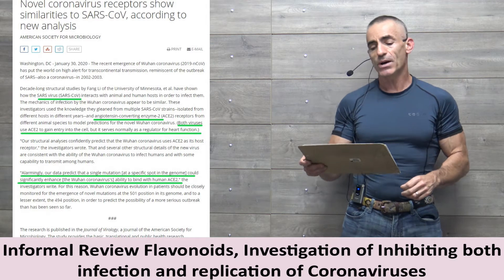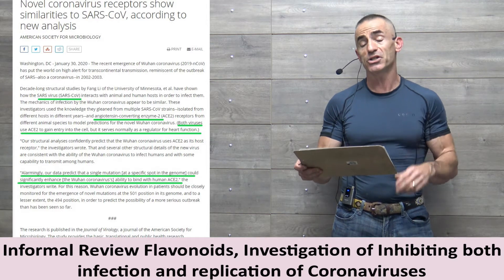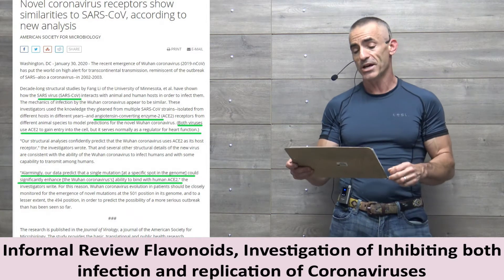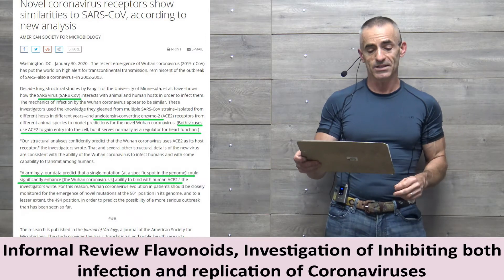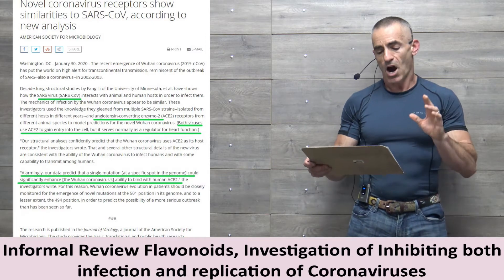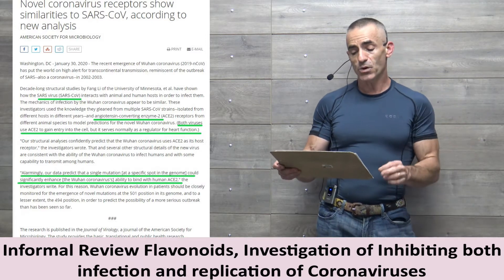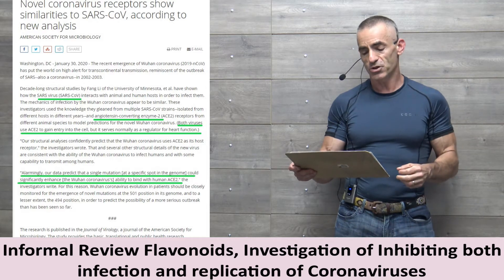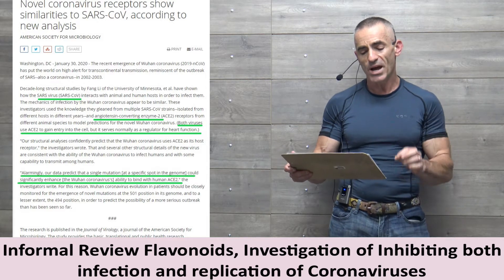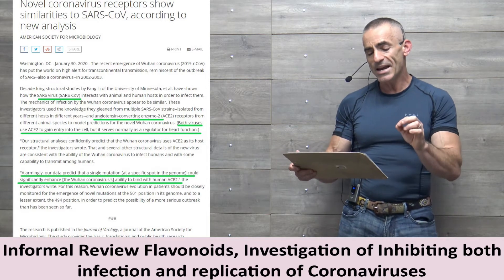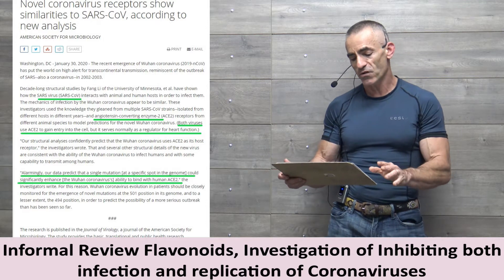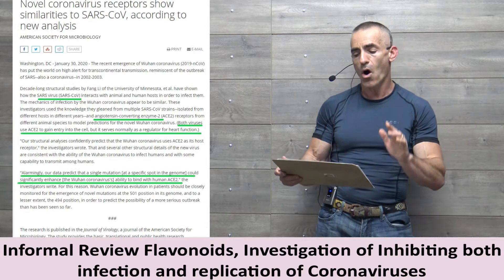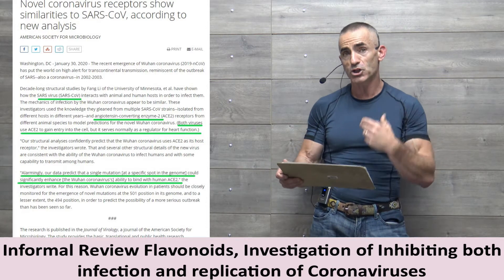Study one: Novel coronavirus receptor shows similarities to SARS-CoV — the first one from about 2002–2003 — according to new analysis. There you see the angiotensin converting enzyme ACE2. Both viruses use ACE2 to gain entry into the cell, but it normally serves as a regulator for heart function.